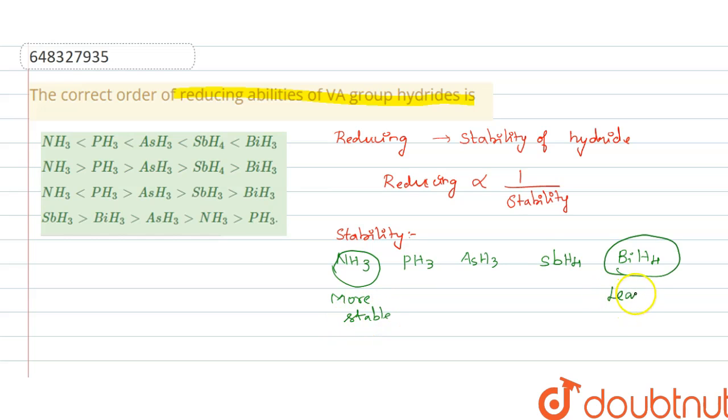BiH3 is least stable when compared to stability. So the order for stability is ammonia greater than PH3 greater than AsH3 greater than SbH3 greater than BiH3.